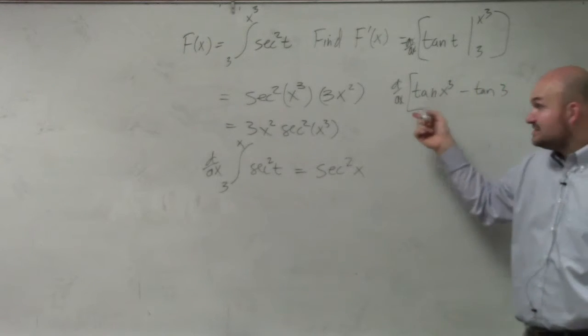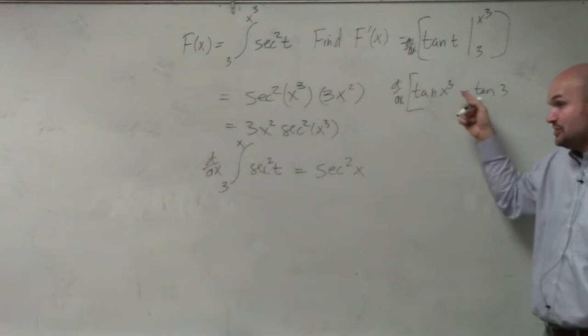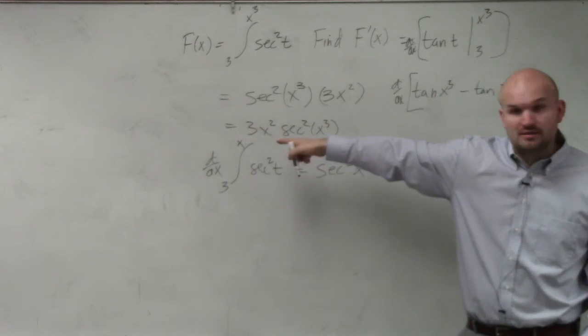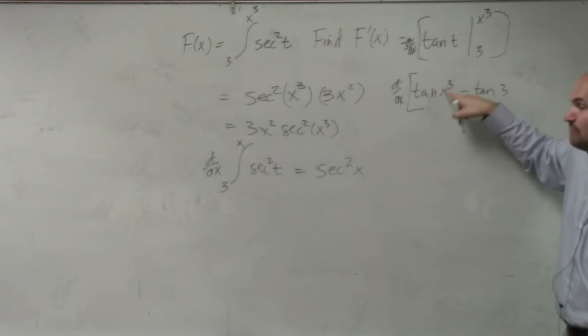Well, if we're taking the derivative of tangent x cubed, you just can't take the derivative of tangent x cubed and say it's secant squared, right? You have to take the derivative of tangent and then multiply by the derivative of x cubed, because you have to apply the chain rule.